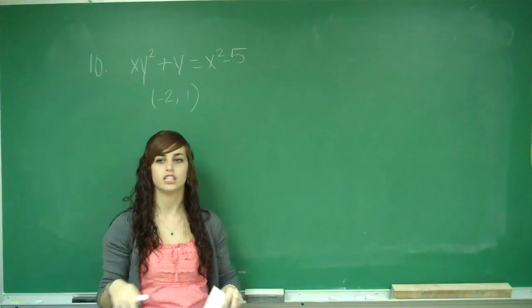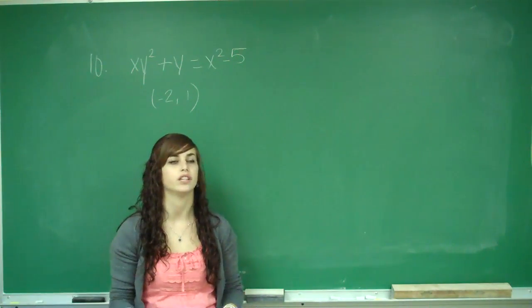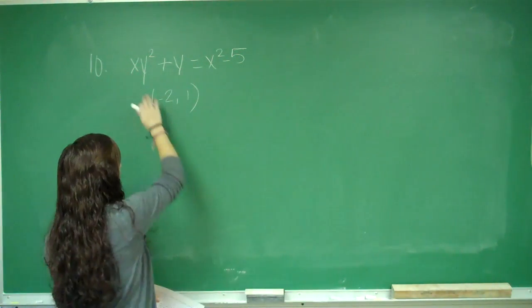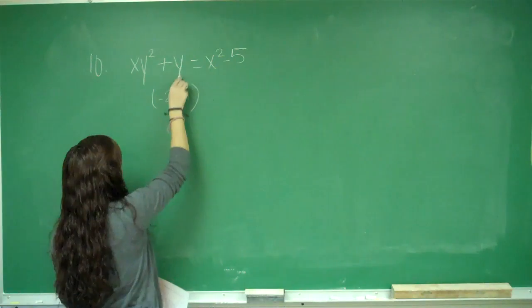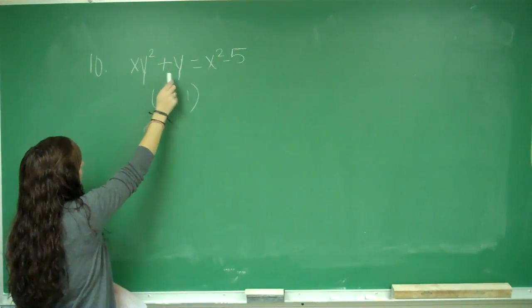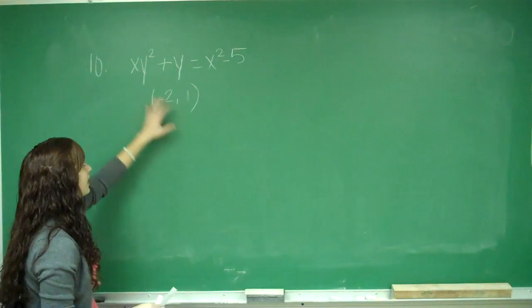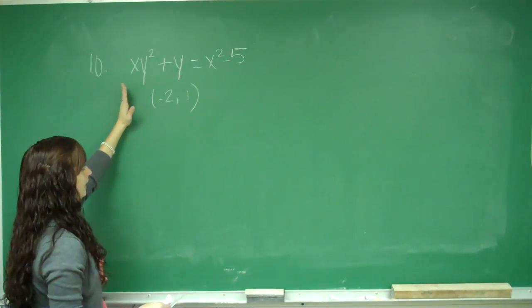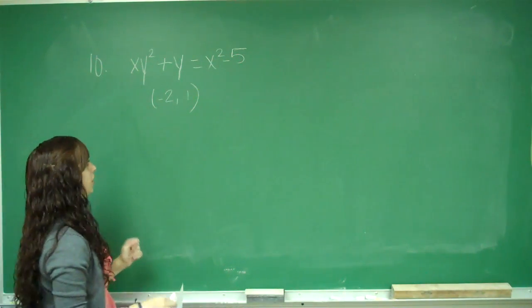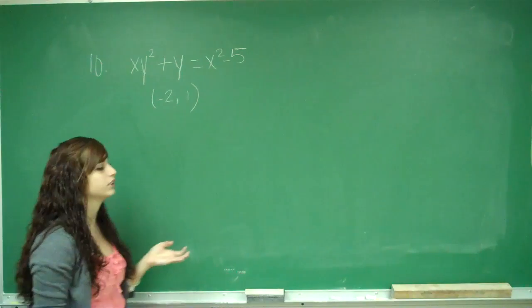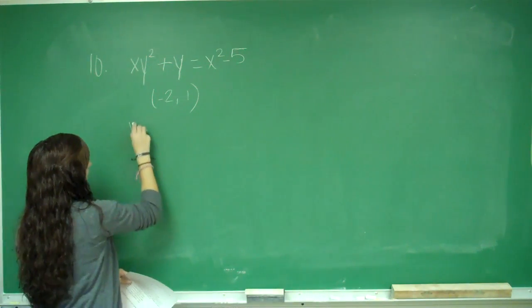So whenever you see slope of tangent, you should think to find the derivative. The derivative is going to be the slope of the tangent. But notice here that we have a y² and a y. So it's a little harder just to find the derivative because I can't get y on one side of the equation by itself. That's what you want to try to do first. But that's not possible here, so I'm going to have to use implicit differentiation.